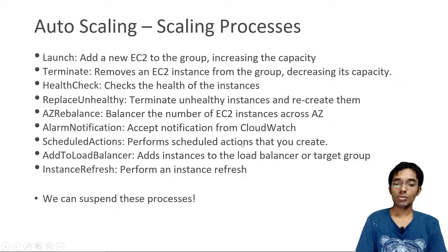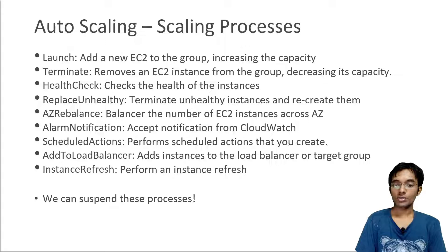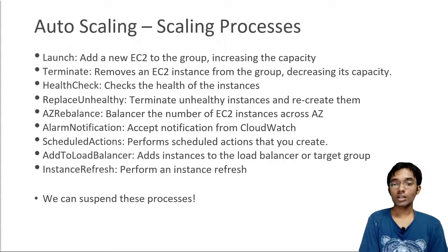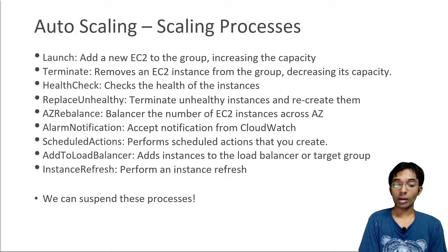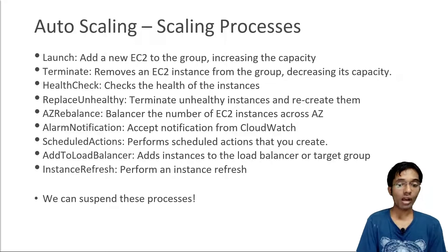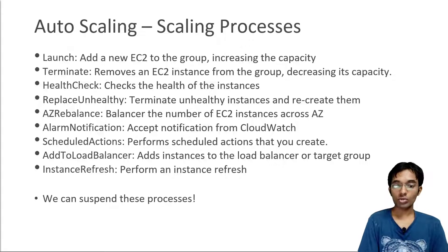Let's talk about the processes within your Auto Scaling Group. The first is the launch process, which adds EC2 instances to the group, increasing its capacity. The terminate process removes an instance from the group, decreasing its capacity. The health check process checks the health of your instances and replaces unhealthy ones. Availability Zone rebalance is a process that looks at your ASG and makes sure there is a balanced number of EC2 instances across all availability zones. Alarm notification is a process that accepts notifications from CloudWatch in terms of scaling.